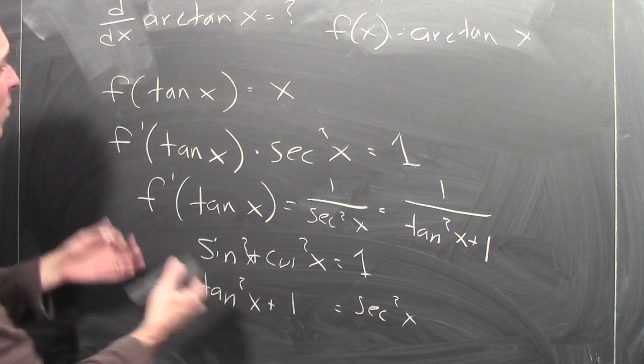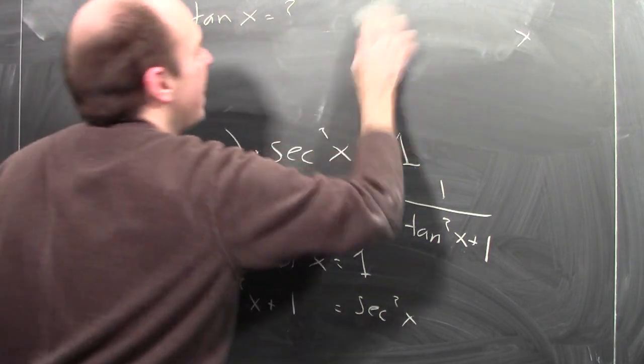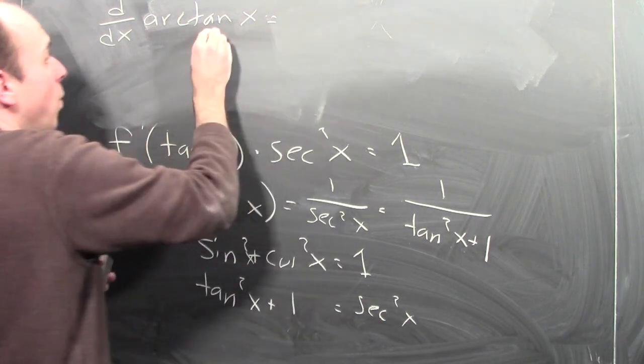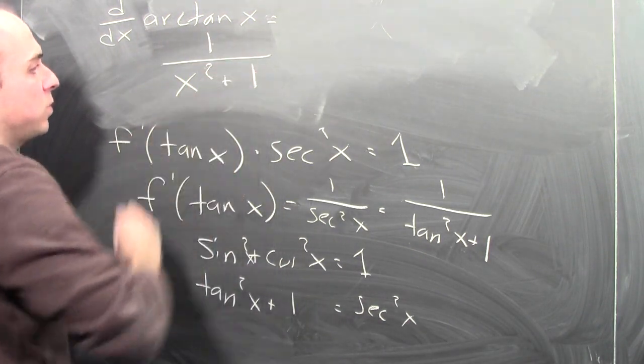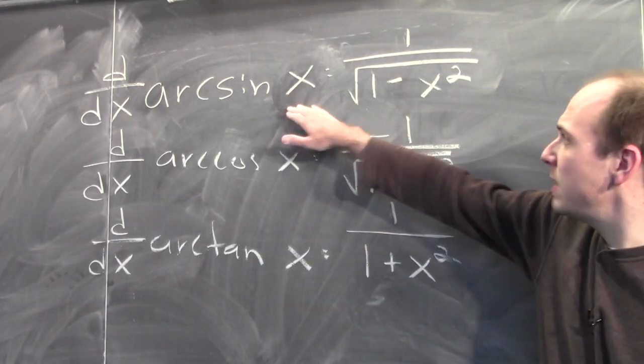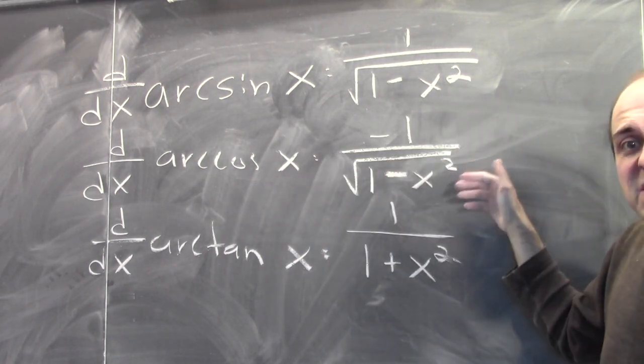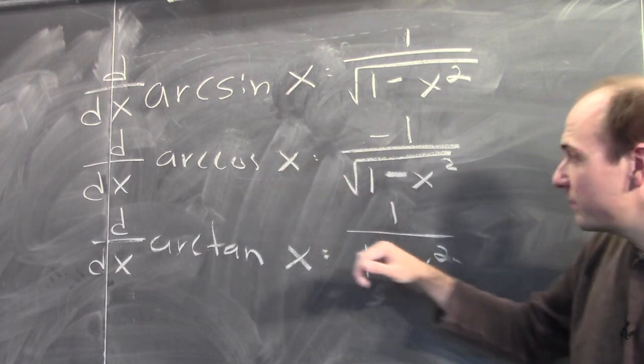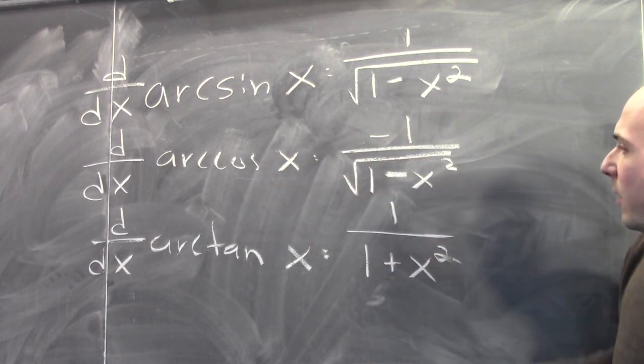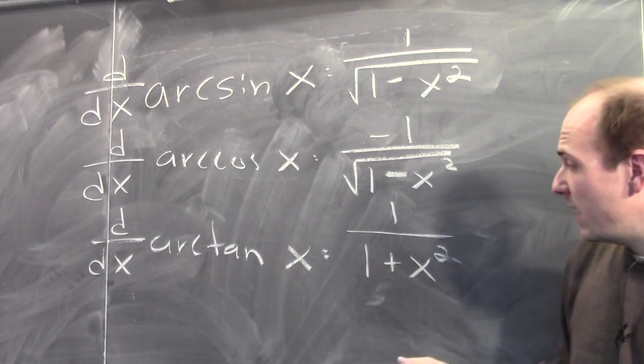A more common way of writing this: the derivative of arc tan x is 1 over x squared plus 1. So here's what we've done: the derivative of arcsine is 1 over the square root of 1 minus x squared; the derivative of arc cosine is negative 1 over the square root of 1 minus x squared; and the derivative of arc tangent is 1 over 1 plus x squared. Now I challenge you to go and calculate the derivatives of arc secant, arc cosecant, and arc cotangent. Have fun.